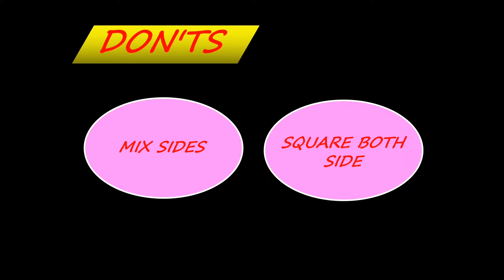Once we know the strategy, let's look at what you should not do. Do not mix sides — meaning you don't work with both sides at the same time. Do not square both sides of the equation. These are the big two no's. If you do them, your answer will be wrong. Take note.